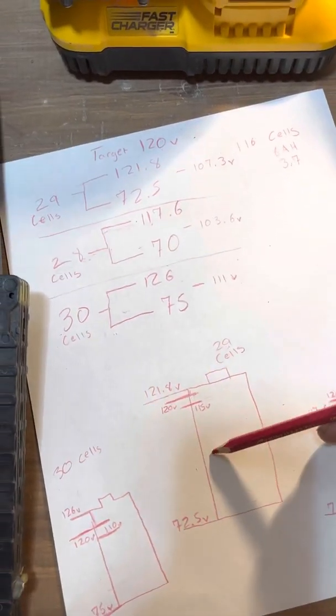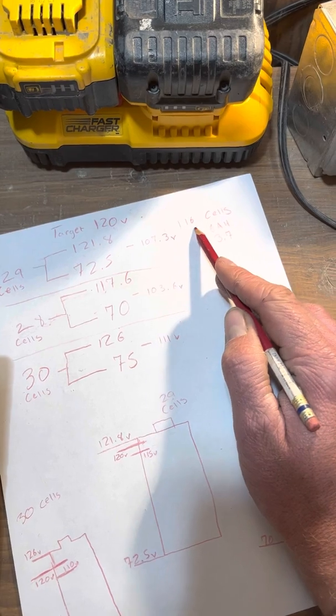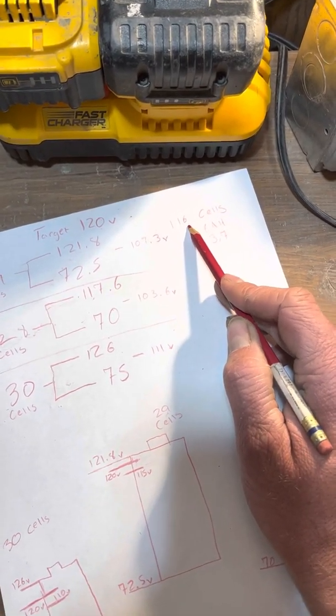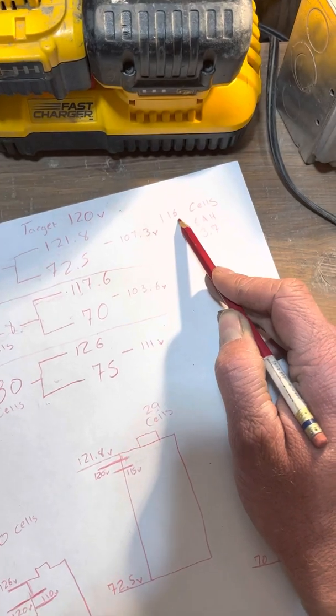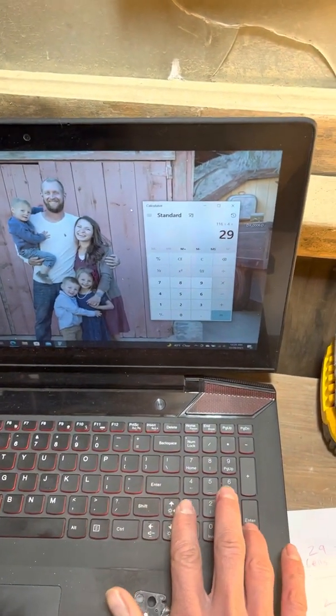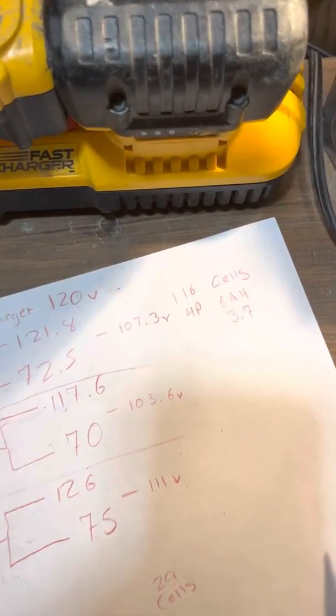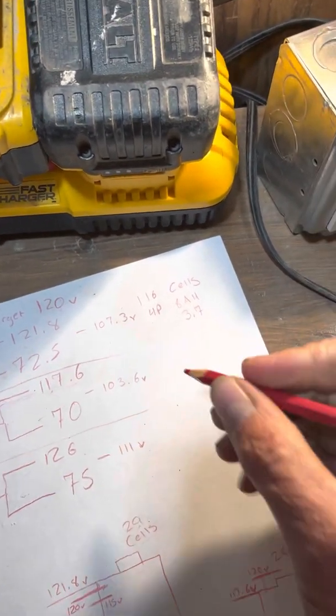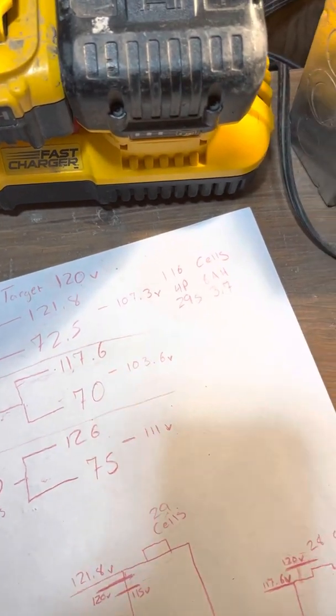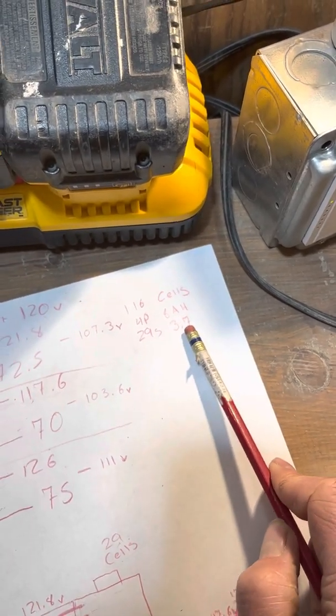And so what this ends up being, 29 cells, is the whole pack when I'm all said and done is going to be about 116 cells. So, we're going to have a 4p, let me see if that's right, 116 divided by 4 is 29s. Yeah, so it'll be a 4p, 116 cells, 4p, so 4 cells in parallel and then 29 in series. And the individual cells are 8 amp hour and at 3.7 volts.